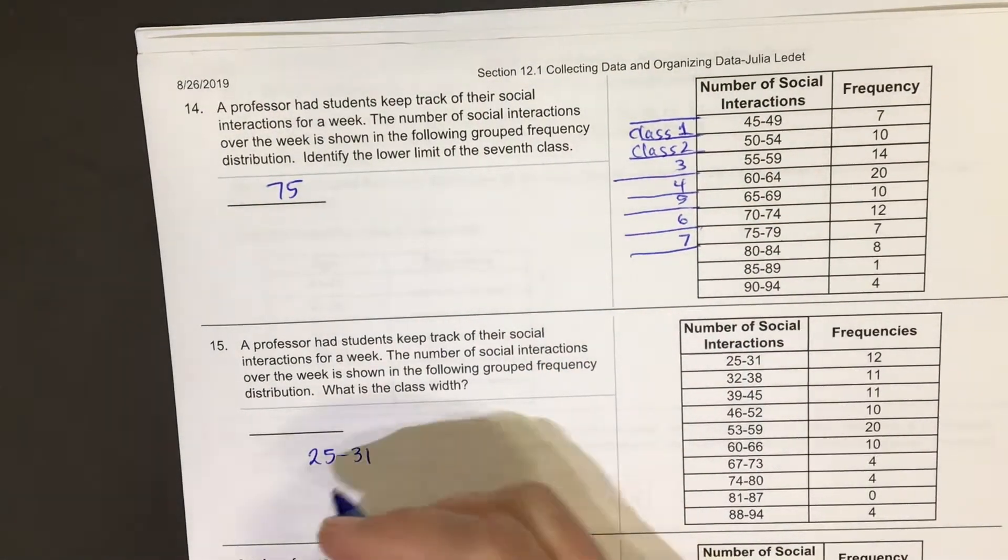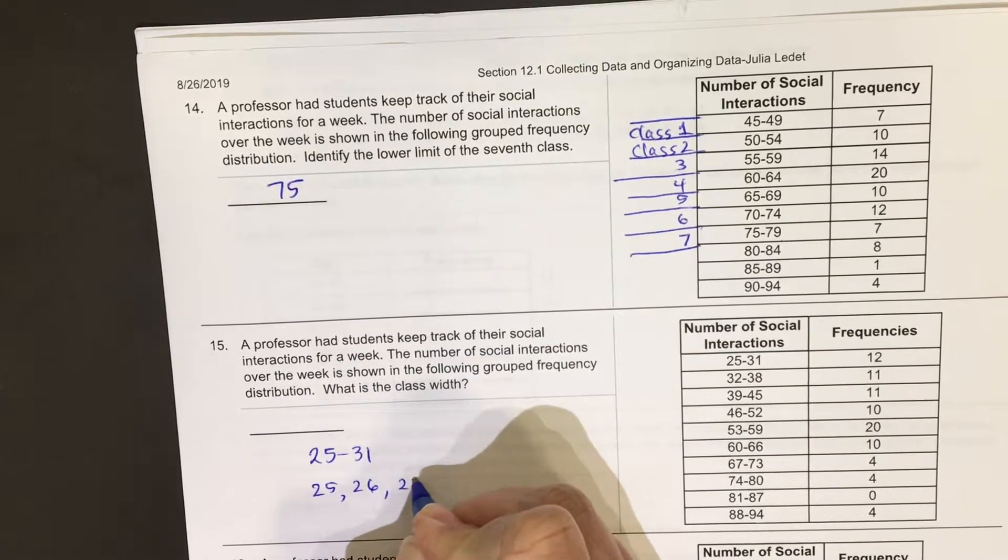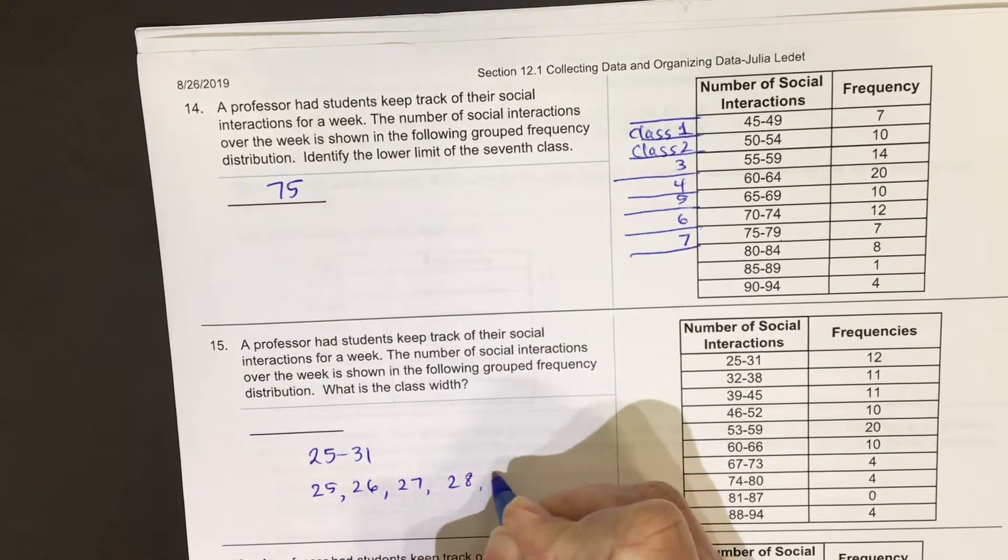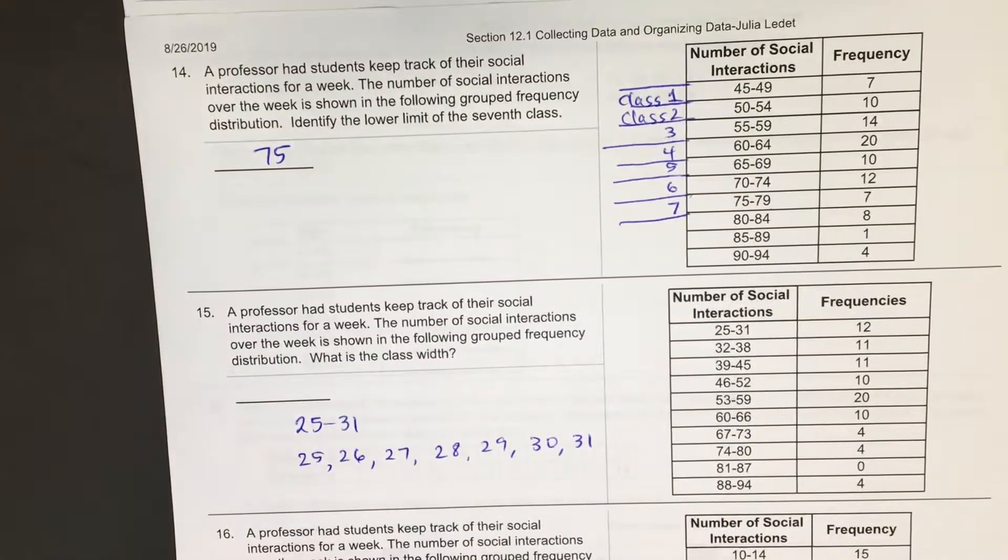I'm going to write it out: 25, 26, 27, 28, 29, 30, 31. Those are the numbers in that class.